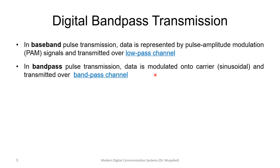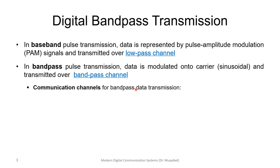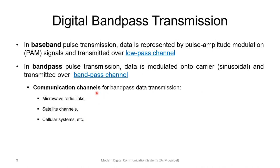We have a sinusoidal carrier transmitted over a band pass channel, and this sinusoid will be modulated and adjusted. Communication channels that use band pass — without explicitly saying it — include almost all wireless communication systems: microwave radio links, satellite channels, cellular systems. All wireless channels are band pass. If we use a carrier and shift the frequencies, it becomes band pass.